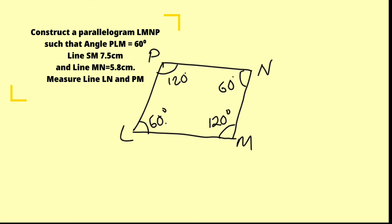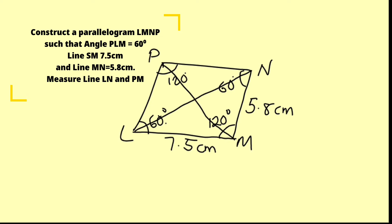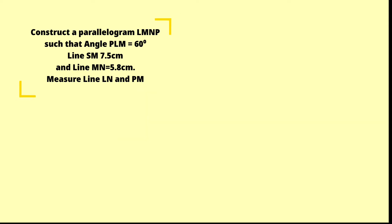The distance from L to M is 7.5 centimeters, and the distance from M to N is 5.8 centimeters. We want to measure the distance from L to N and from P to M. We will begin by constructing the base of 7.5 centimeters, then construct the 60-degree angle, then the 120-degree angle, and measure the distance MN. Since opposite sides are equal, we do the same for LP.